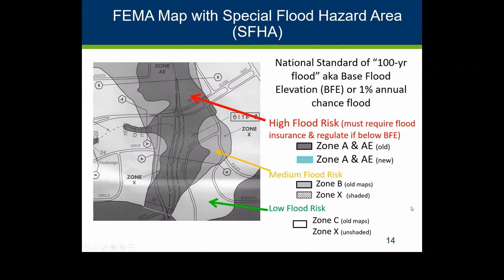FEMA maps the high flood risk area — essentially mapping the 100-year flood elevation, which we try to call the 1% annual chance flood elevation. We avoid the '100-year' term so people don't think that having a big flood last year means they're safe for 99 more years. The 1% is more accurate: every year there's a 1% chance of reaching that flood level or higher. On average it might be once every 100 years, but floods don't just come every 100 years.